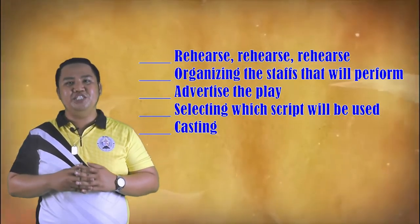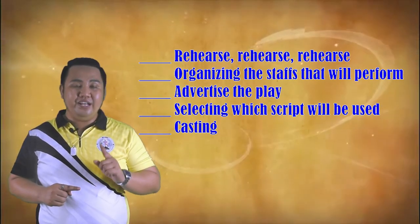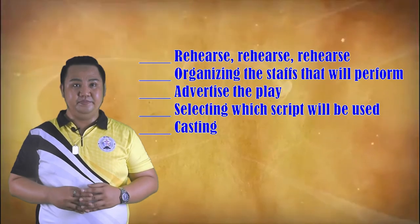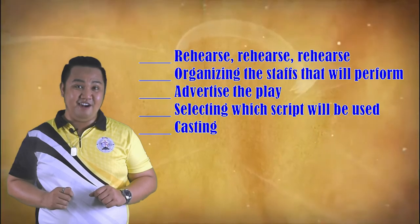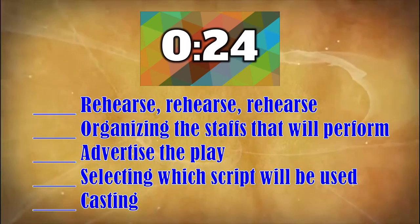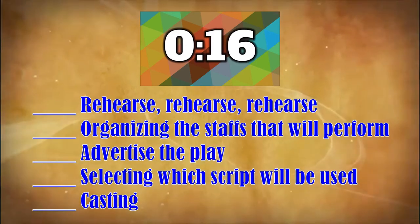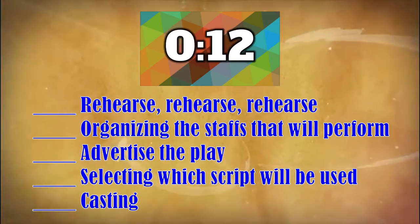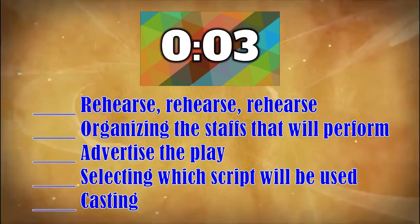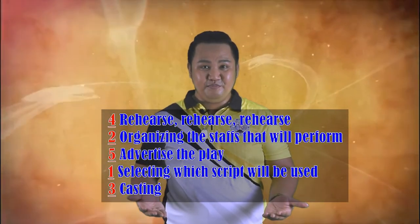Let us have your assessment by arranging the following according to the process by putting a number 1 to 5, where 1 is the first process while 5 is the last process. You will be given 30 seconds to complete the process. Are you ready? Your 30 seconds timer will start now. And here is the correct sequence of the process of producing a play.